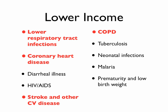Let's tackle lower income first. The top killer worldwide in low income areas is pneumonia, or lower respiratory tract infections — considered separate from tuberculosis, although it's also a respiratory tract infection. There's also coronary artery disease, diarrheal illnesses, things related to HIV and AIDS, stroke, COPD which is emphysema related to smoking, TB, neonatal infections, malaria, prematurity, and low birth weight.